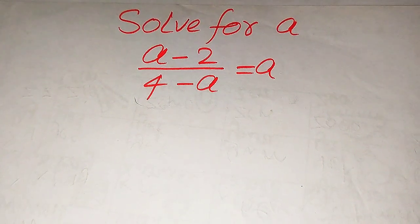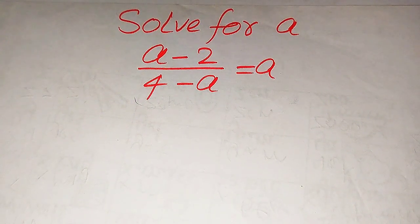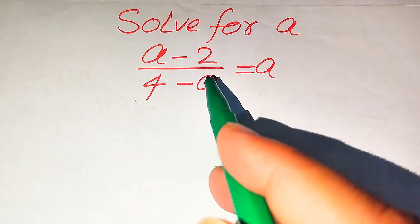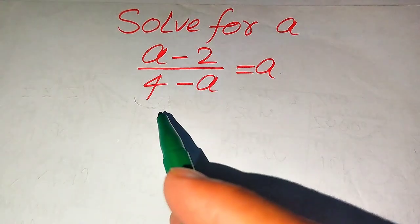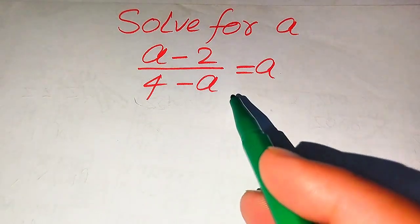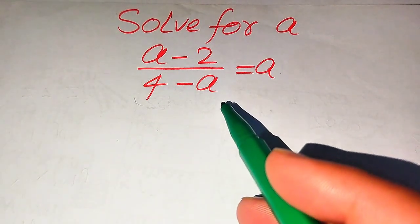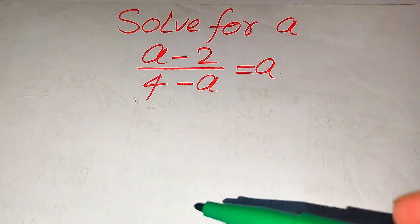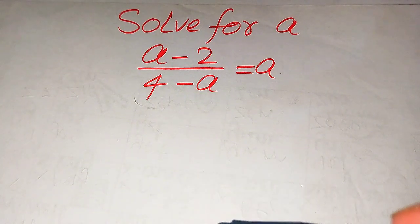Hello everyone. How to solve this problem for the values of a? We have (a minus 2) divided by (4 minus a) equals a, and we solve this problem for all the values of a.